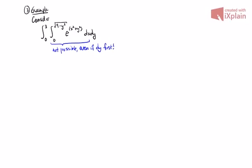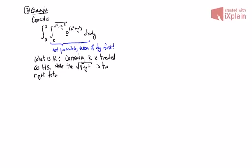So again, you might say, well, maybe we can't do anything. But let's ask the same question. What is r? Well, the dx dy tells us this is horizontally simple. So currently, r is treated as horizontally simple. Now, before I draw, one thing I want to point out is the square root of 9 minus y squared. That's the right-hand function. This is, more succinctly, x equals the square root of 9 minus y squared, which we can rewrite as x squared equals 9 minus y squared, or x squared plus y squared equals 9. Keeping that in mind, keeping in mind that the circle will be relevant.